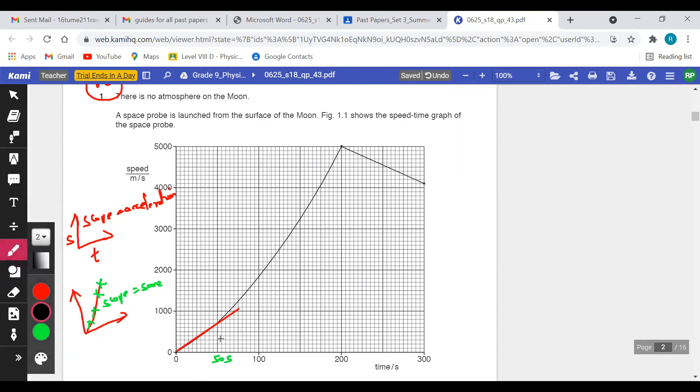It started becoming a curve. From till this point it was a uniform acceleration. So between 0 to 50, wherever you may take the slope it will give the same value. Consider any two points.